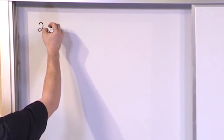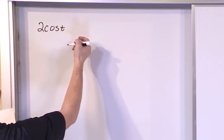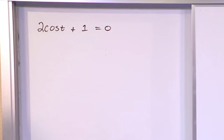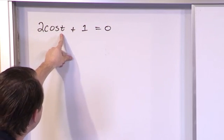So here let's do 2 times cosine of some angle t, we're using in this case, plus 1 is equal to 0. This is a trig equation. Right? The only variable here is the t, which is an angle, right?